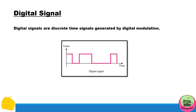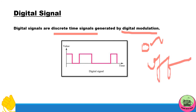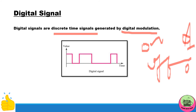Digital signals are discrete time signals generated by digital modulation. Unlike analog, there are no infinite values — they only take two states: 1 or 0. In the graph you can see this is 0, this is 1, alternating. So digital signals only take discrete time values, that is 0 and 1 — the binary values.